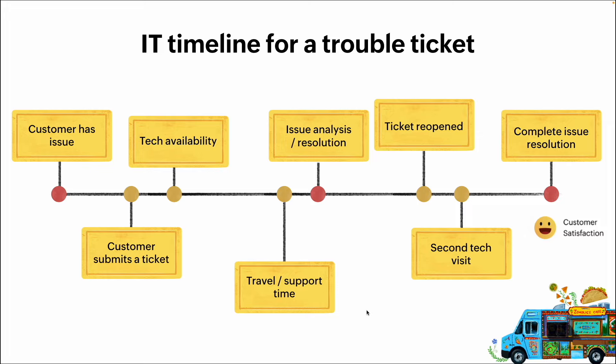So Bob says his computer looks good and goes about his business day. Bob starts working, works for about 30 minutes, and realizes his email's not connected — something else is wrong. He goes and reopens that trouble ticket, but that technician has already moved on and is handling another ticket. So now we have additional downtime. The ticket gets reopened, the tech has to readdress it — a second visit. Finally, possibly after an entire 24 to 48 hours, Bob is 100% working again, but we've got downtime and possibly lost profits.